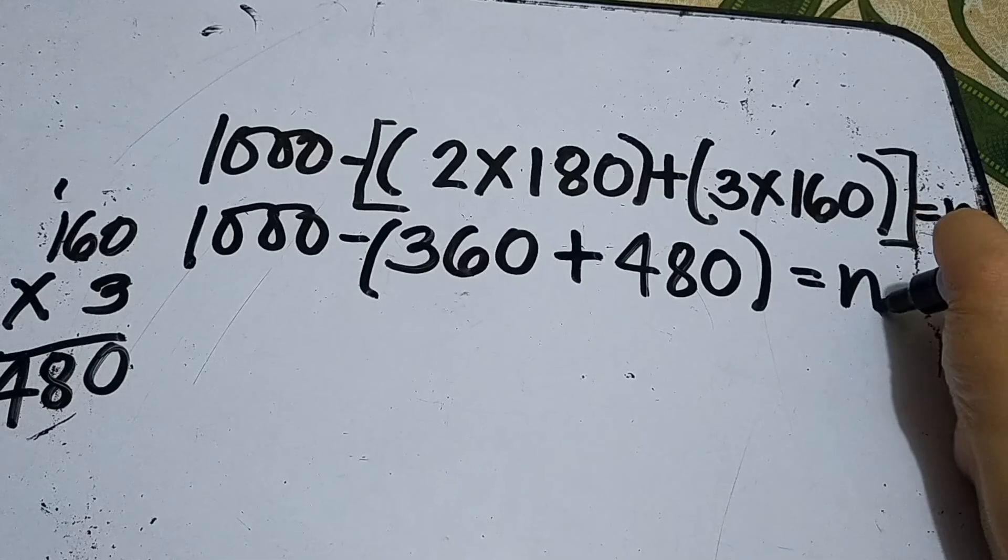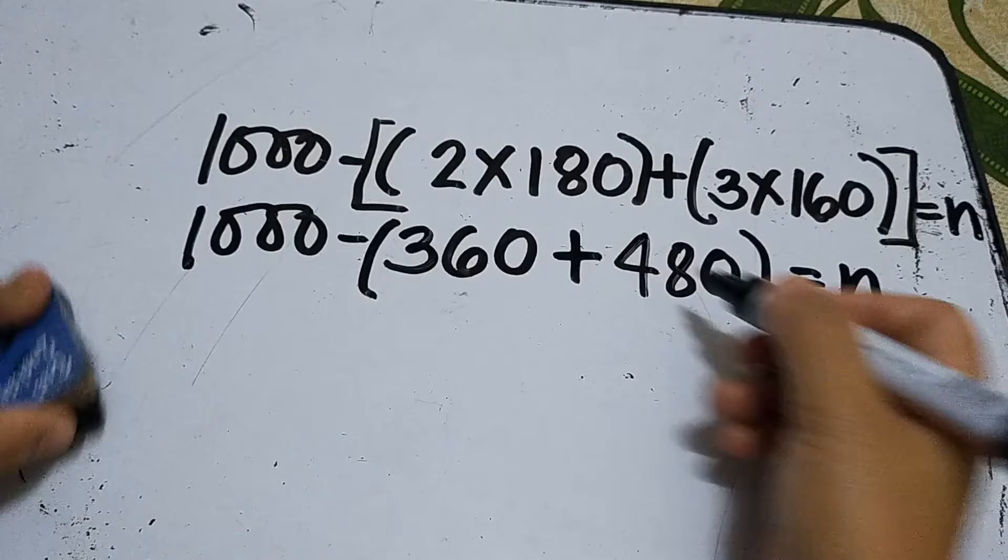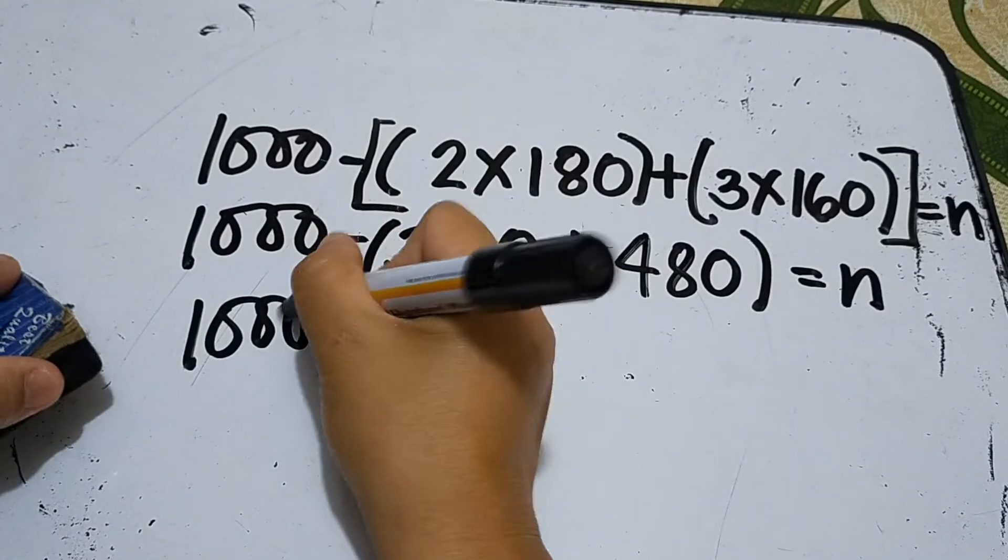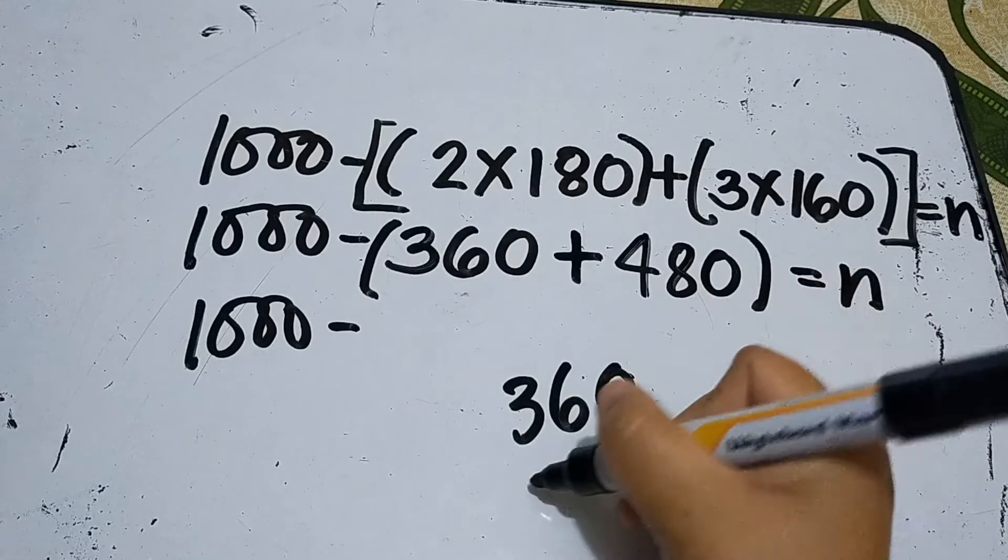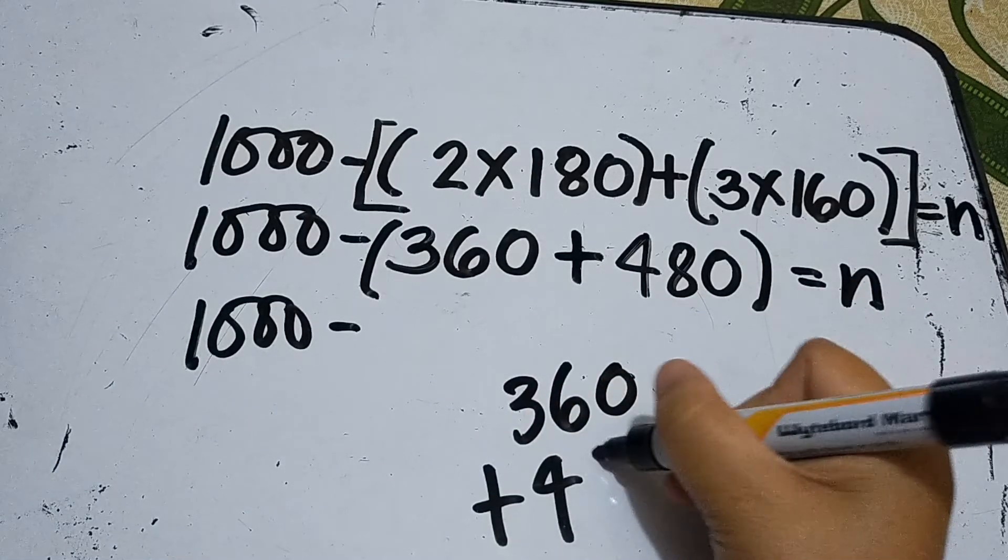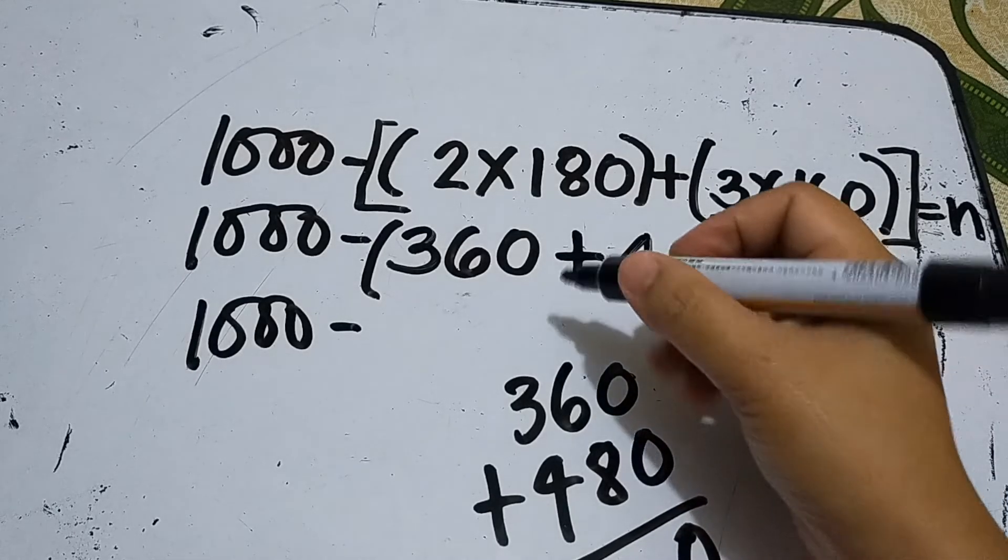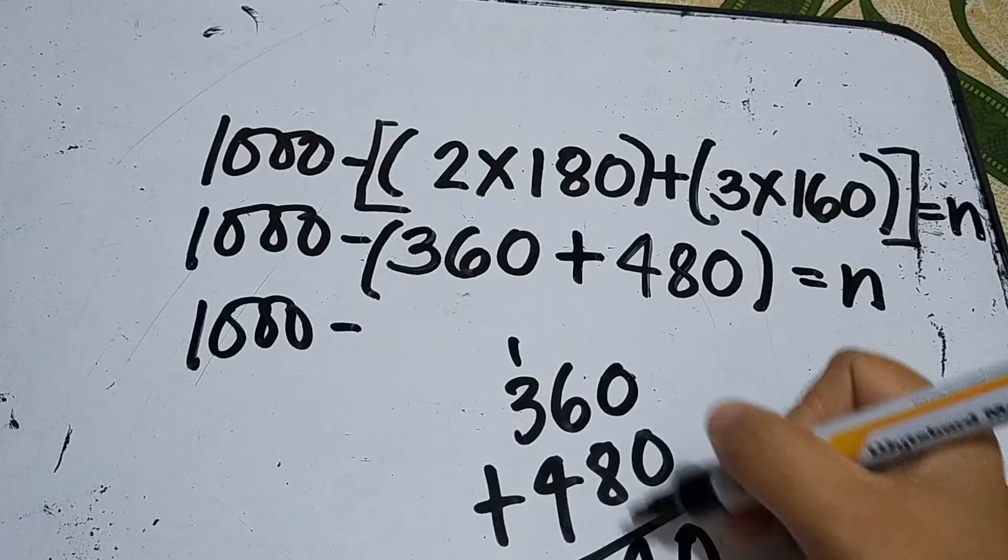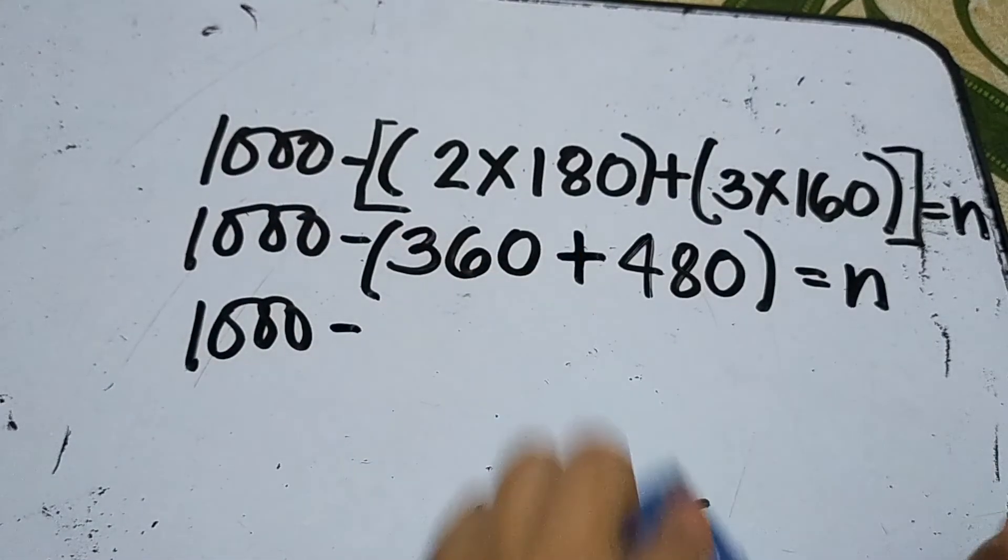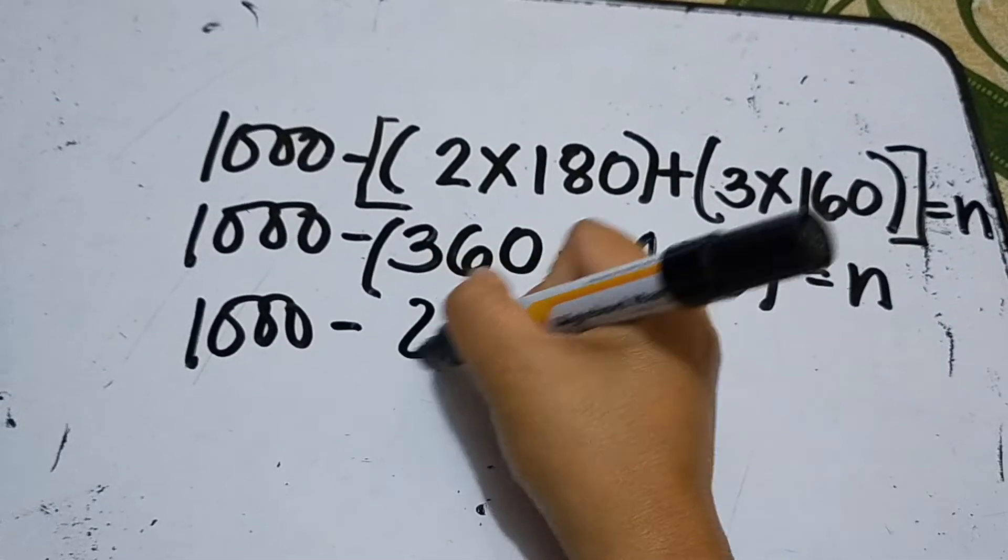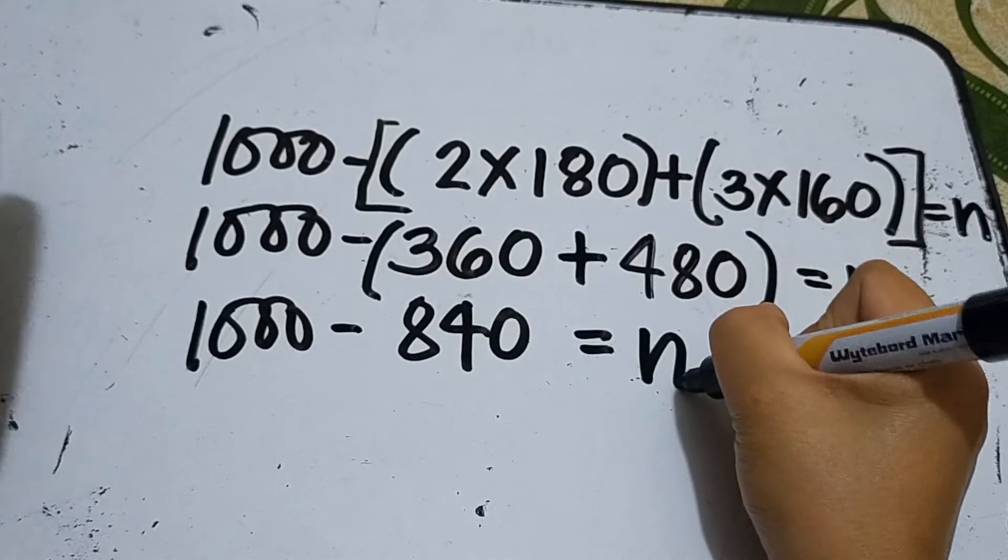Equals n. You can erase the scratch work. What's enclosed in parentheses, simplify by adding: 360 plus 480. 0 plus 0 is 0, 6 plus 8 is 14, 1 plus 3 plus 4 is 8, so 840 equals n.